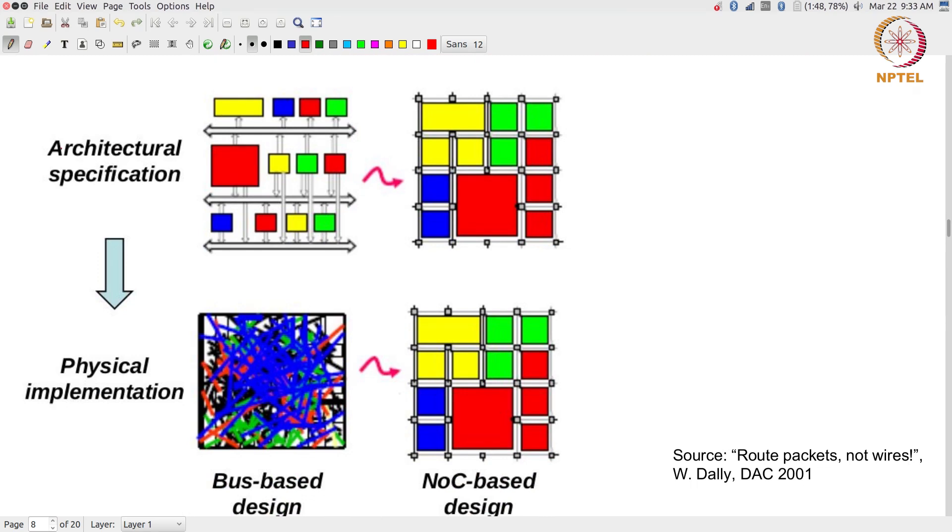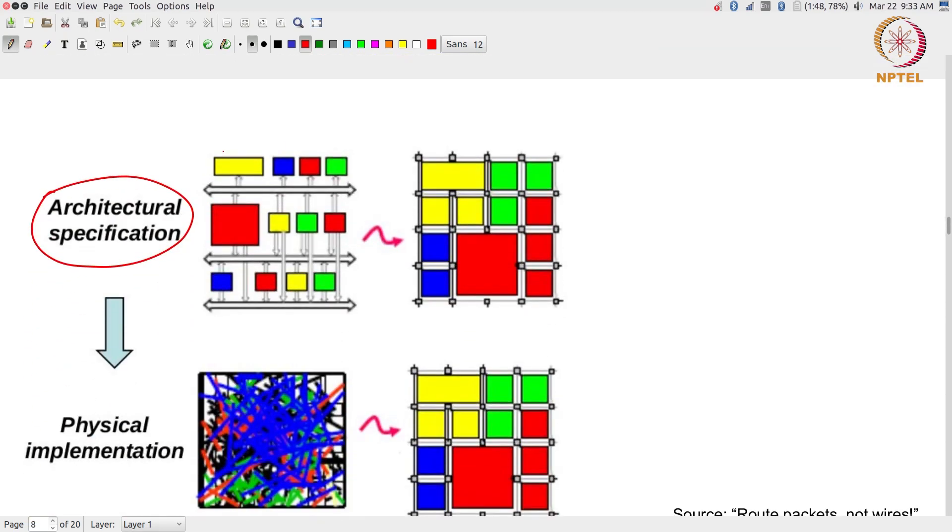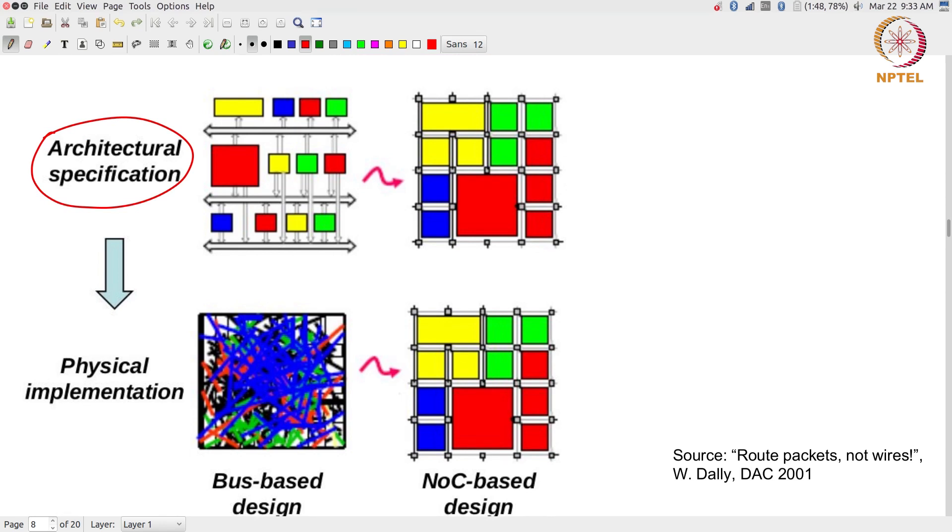Over here what we have is we start with an architectural specification which is a high level block diagram like the one that we saw here. This is an architectural specification, it is telling you what the blocks are and how they are connected to each other logically. If I take that same architectural specification and go through to physical implementation, what usually ends up happening is this figure that you see on the bottom left. For those of you who might have gone through a complete process of actually taking a chip through the synthesis and then place and route, you will see that this is not unrealistic. It may not be this bad, this is obviously an exaggeration of how bad it is, but you would definitely end up with something of this sort.